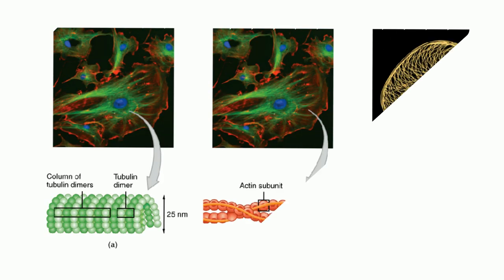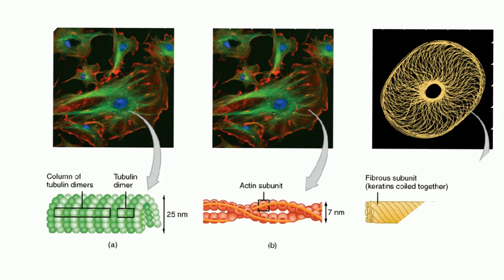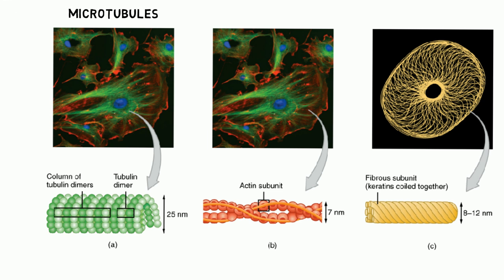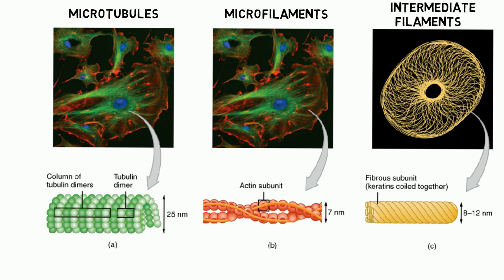Instead of bones, the cytoskeleton of cells is made up of filamentous proteins known as microtubules, microfilaments, and intermediate filaments. As you can see, they are structurally very diverse.